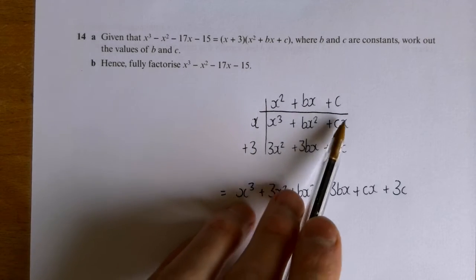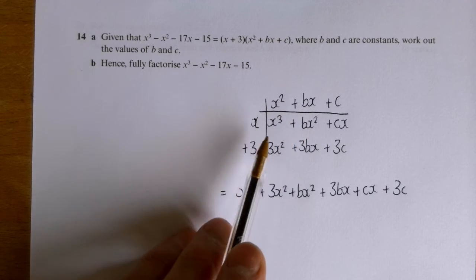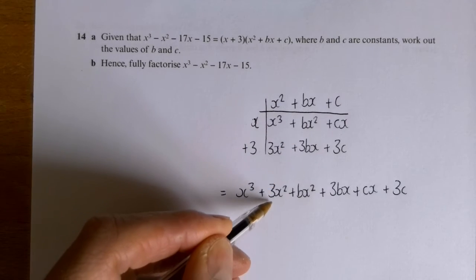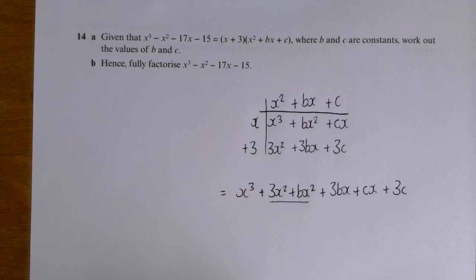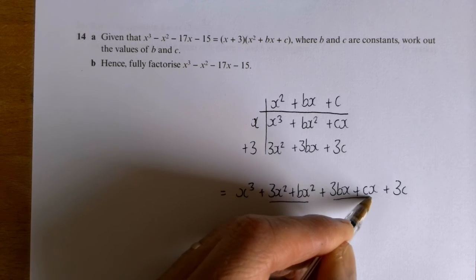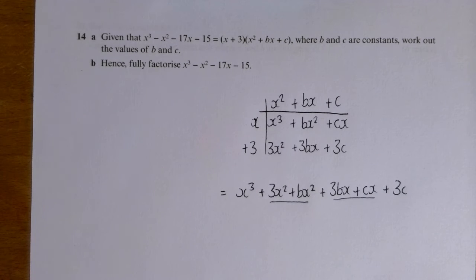So here I've multiplied out the right hand side, I've gridded it out. And it's a bit frustrating this one because of the missing value. So when I come to combine it, I can't combine those and those. So what I've done is, these two I've written here, those are my two x squared terms. And then these two I've written here, there are my x terms.